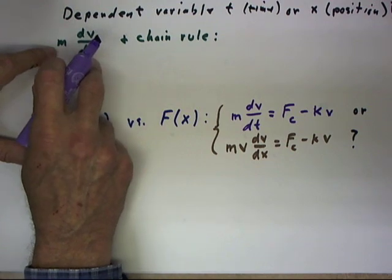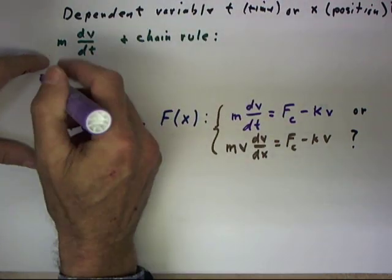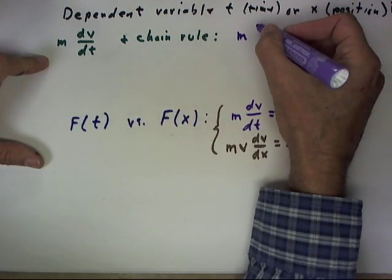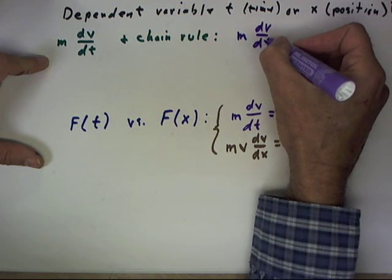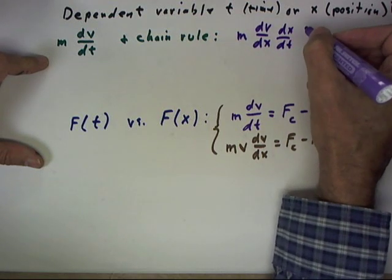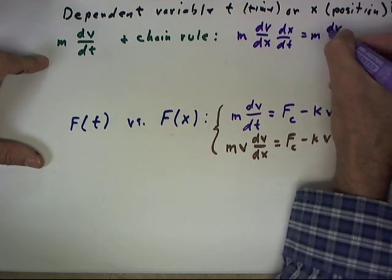If we take the expression m dv/dt, we can apply the chain rule and interpose the variable x in the form m dv/dx times dx/dt. That's the same as m dv/dt.